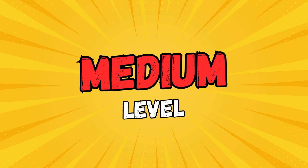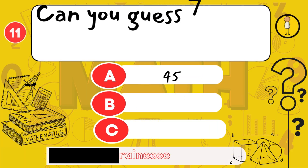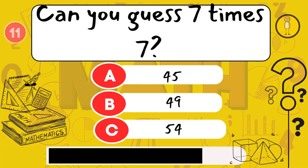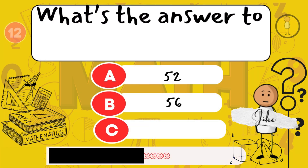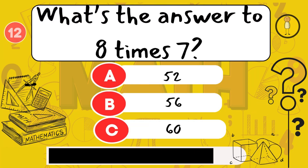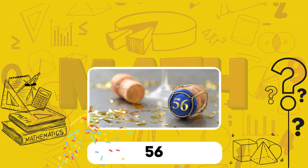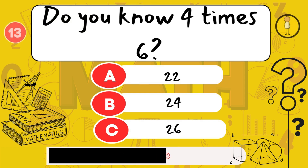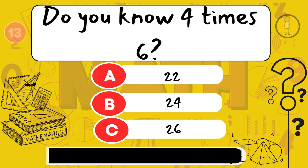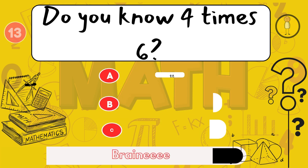Medium level. Can you guess 7 times 7? 49. Do you know 4 times 6? 24.